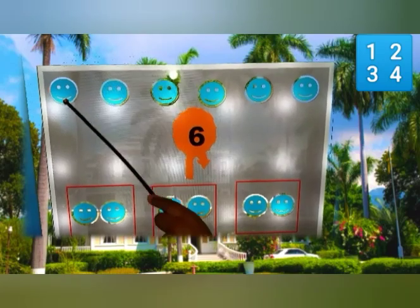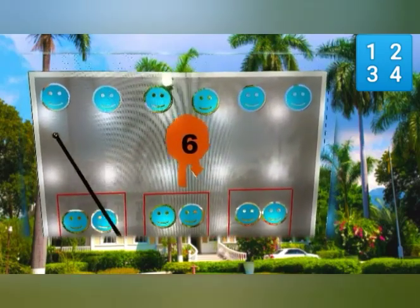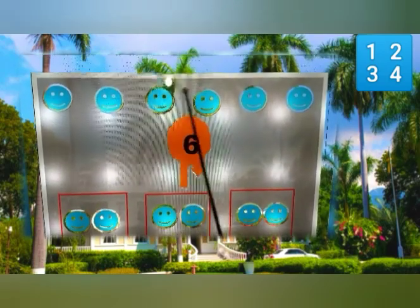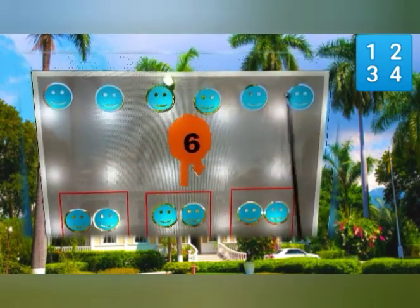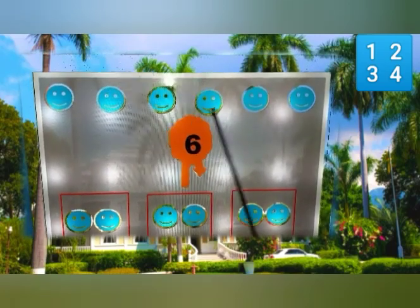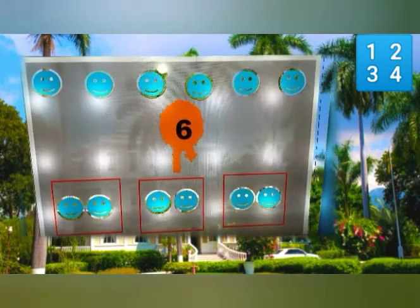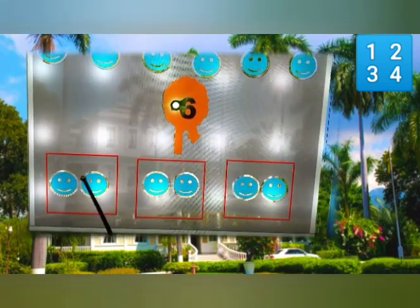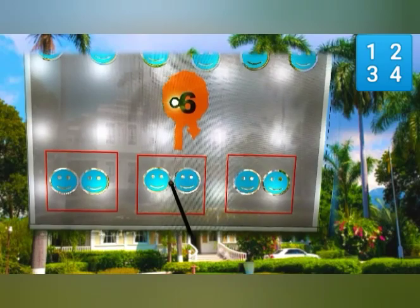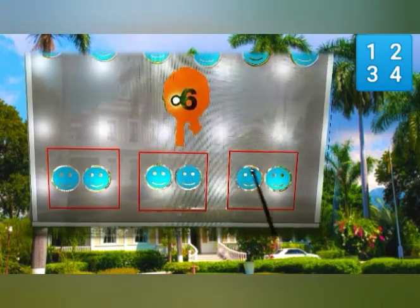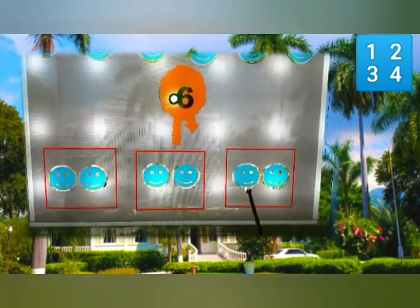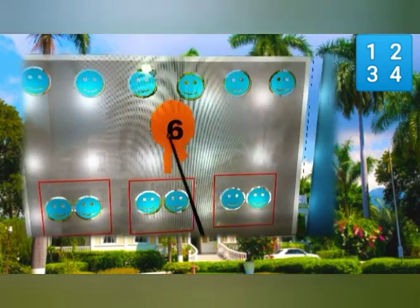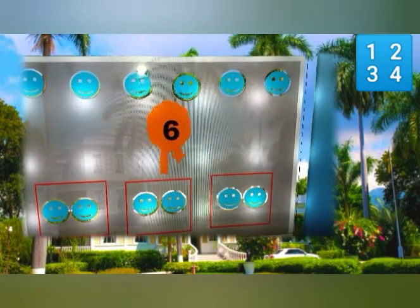Here we have some faces. Let's count them. One, two, three, four, five, six. There are six. Now let's divide them by two. Here's one group of two, another group of two, and another group of two. We don't have any left. So six and eight are even numbers.